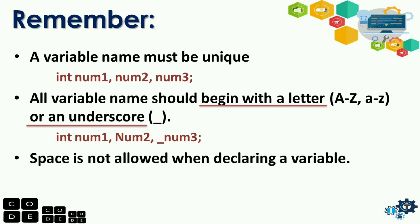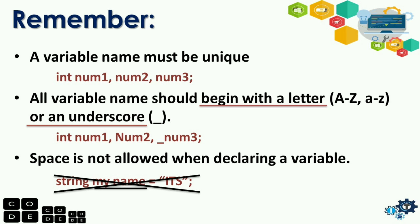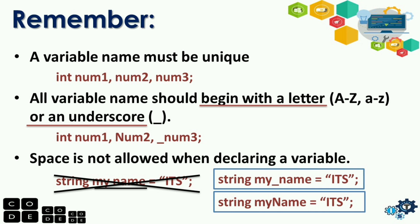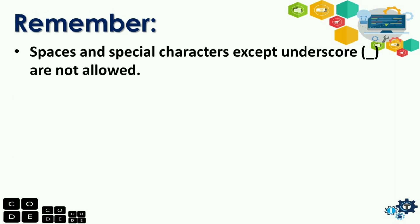Next, spaces are not allowed when declaring a variable. Example: 'string my name = "ITS";' — if you look at it, 'my name' has a space in the middle, so this is an example of an invalid variable. You will get an error because of the space. To fix it, you can use: 'string my_name' with an underscore in between, or 'string myName' with a capital letter on the next word.